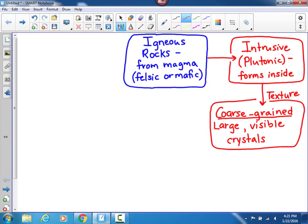You will see two coarse-grained rocks in your lab. One that is felsic, and remember that means it's generally light-colored. That one is granite.